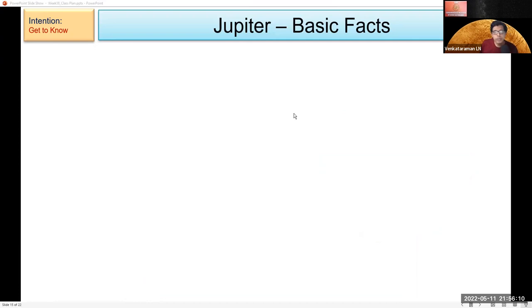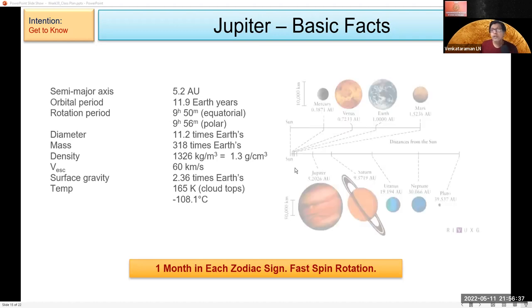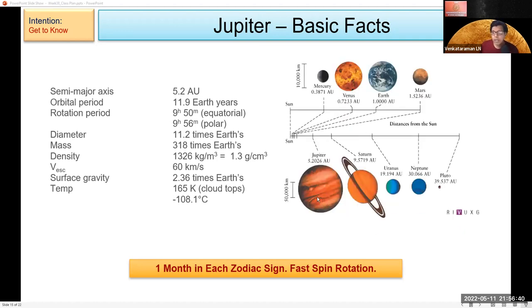And coming to Jupiter - this is almost five times away compared to the Earth from the Sun. You see the orbit takes around 12 years. That means Jupiter spends one year in each zodiac sign - that completes 12 years, 12 zodiac signs. And you find that outer temperature is very low. This is all representing distances from the Sun.